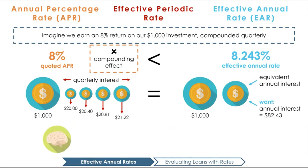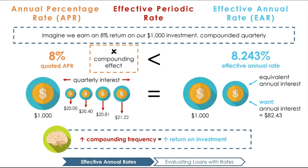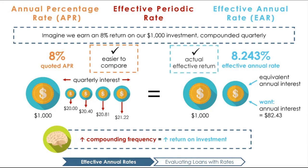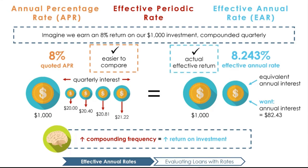The more frequently our investment is compounded, the more we put our money to work, and the more interest on interest we make. When expressed in annual terms, the EAR captures this compounding effect while the APR does not. You may wonder why we use APR at all, if it doesn't show us the effective return on our investment. APR is easier for investors to understand and compare between investments, since it doesn't change when we change the frequency of compounding periods. But EAR tells us our actual effective return.